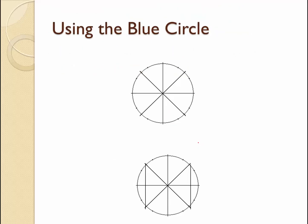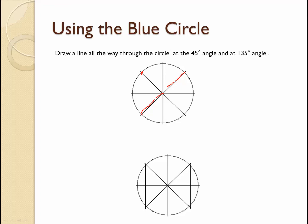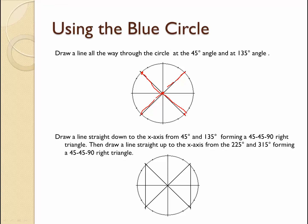Using the blue circle, draw a line all the way through the circle at a 45° angle — from here to here — and also at 135°. Put a dot at each point and use a ruler or a straight edge to sketch those lines. Then draw straight lines down the x-axis from 45° to 135°, forming a 45-45-90 triangle. Please make sure you're using a ruler — this has to come out straight. You need a ruler for this activity.